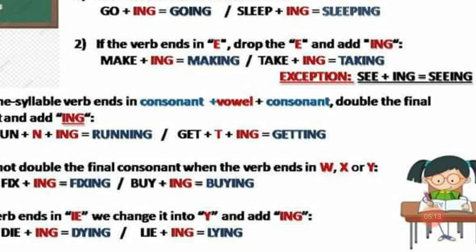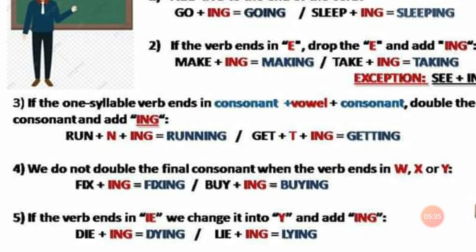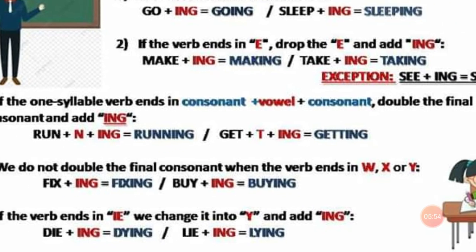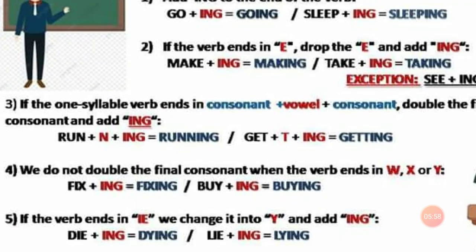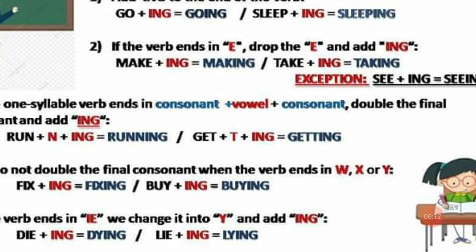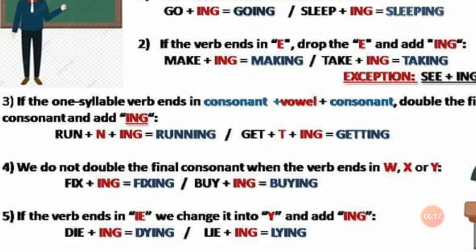Make + ING = making; take + ING = taking. Muchos profesores tratamos de explicar esto como que si la E es silenciosa se borra. Fíjense que si la E no es silenciosa, para formar el gerundio no le vas a quitar la E sino vas a colocar ING directamente. Para los efectos prácticos, cuando vea dos E no va a aplicar esta regla — simplemente colocas ING. La tercera regla: if a one-syllable verb ends in consonant + vowel + consonant (CVC), double the last consonant and add ING. Por ejemplo, RUN termina en R (consonante), U (vocal), N (consonante) — doblamos la N y colocamos ING: running. Igual con GET: getting.